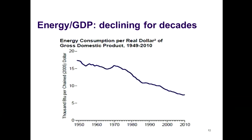Energy per dollar of GDP has been declining for a long time, reflecting efficiency, the decline of manufacturing, and probably other factors as well — efficiency in electricity generation and other dimensions.